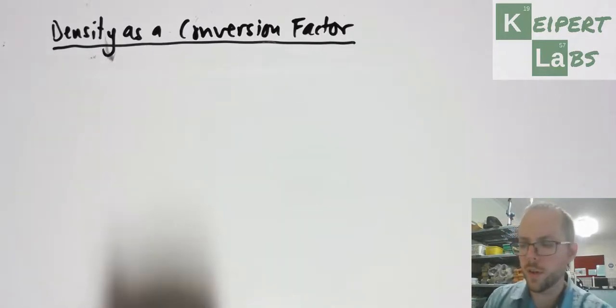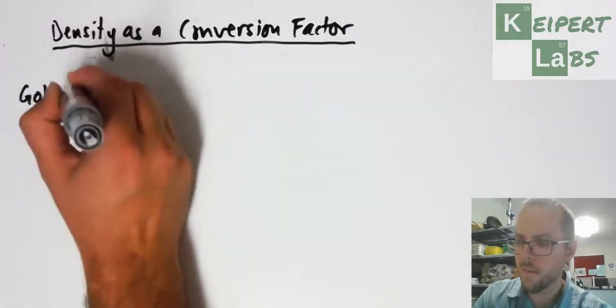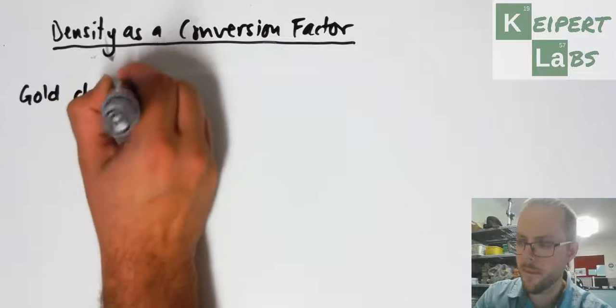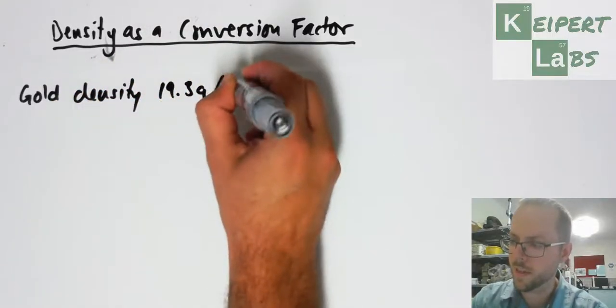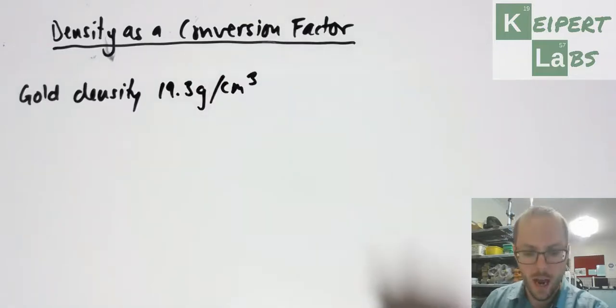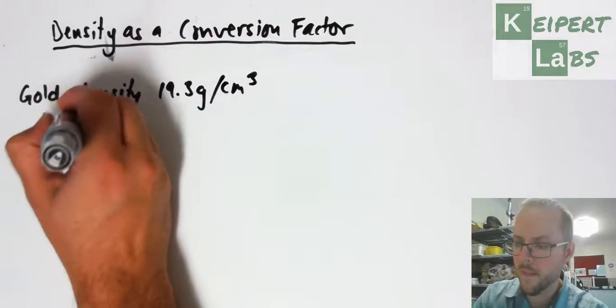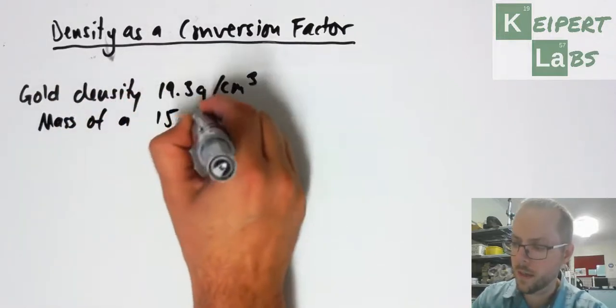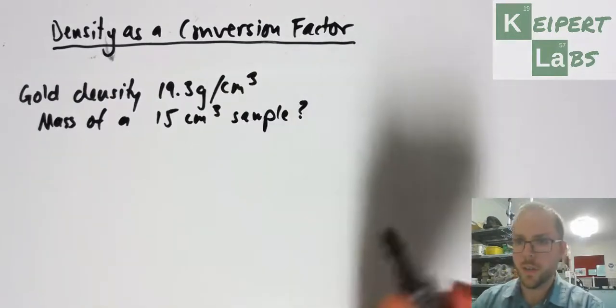We're going to look at gold as an example. Gold has a density of 19.3 grams per cubic centimeter. What is the mass of a 15 cubic centimeter sample? Using the information I'm given, I can set up two conversion factors, just like we've done before.